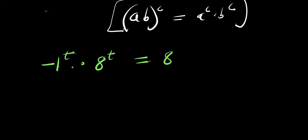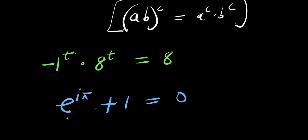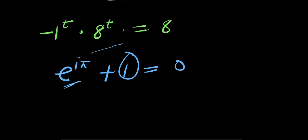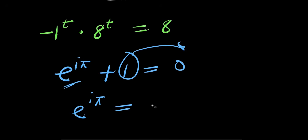Now let's consider Euler's identity: e to the power i times pi plus 1 equals 0. I can rearrange this to isolate the relevant term. Moving the positive 1 over, I get e to the power i times pi equals negative 1.